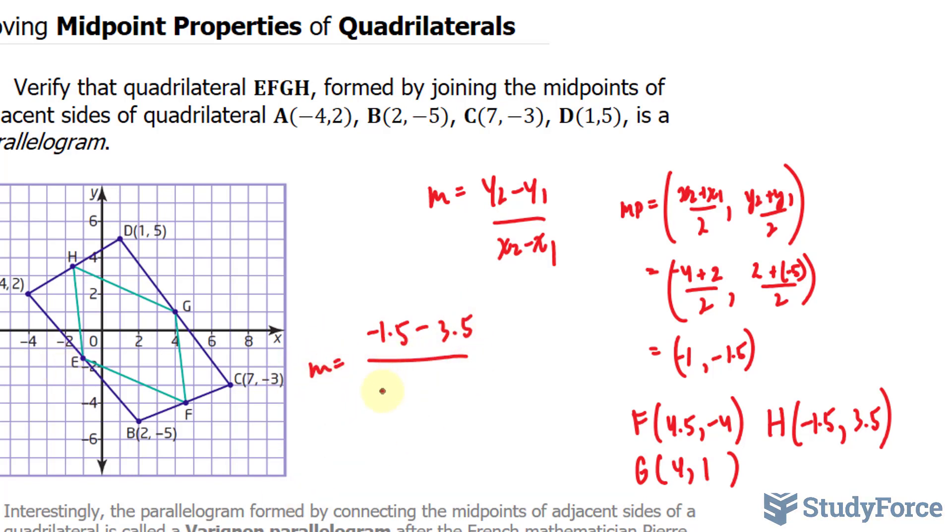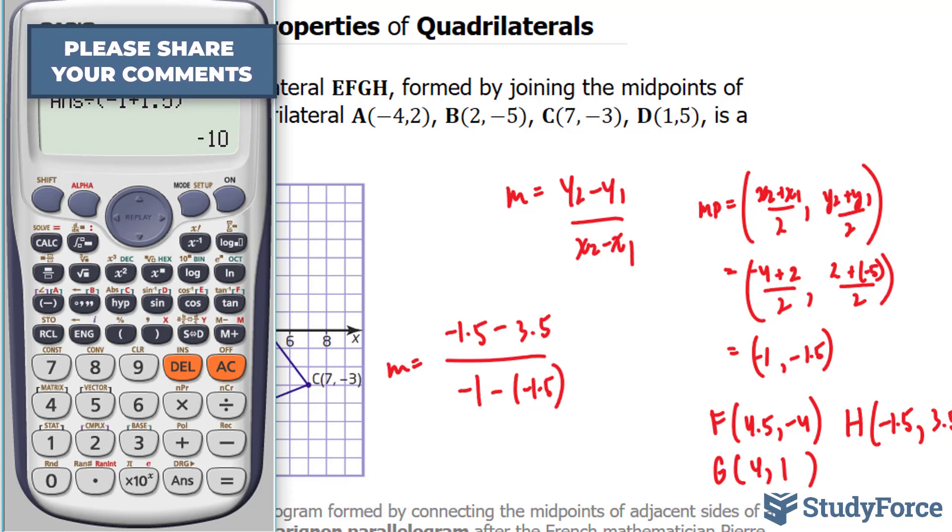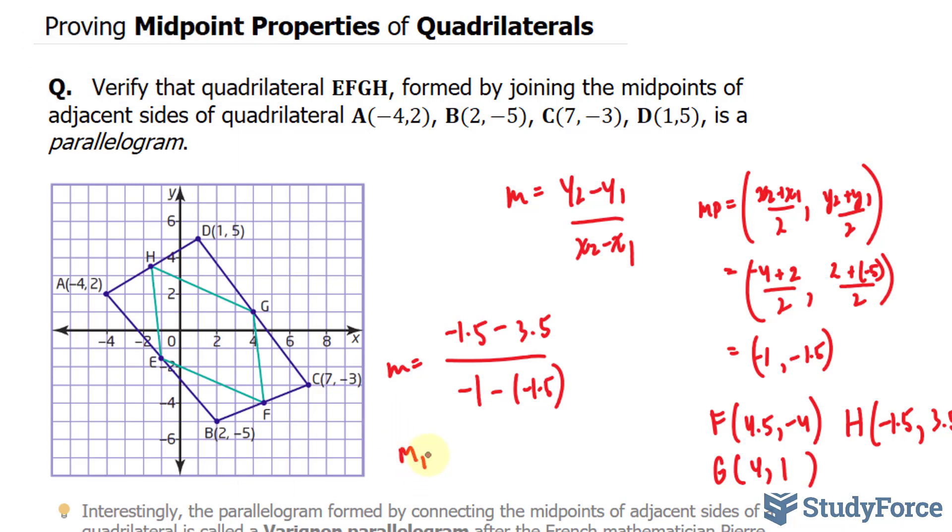Now using our calculator, negative 1.5 minus 3.5 is equal to negative 5, divided by negative 1 plus 1.5. This gives us negative 10. So the slope between H and E is negative 10.